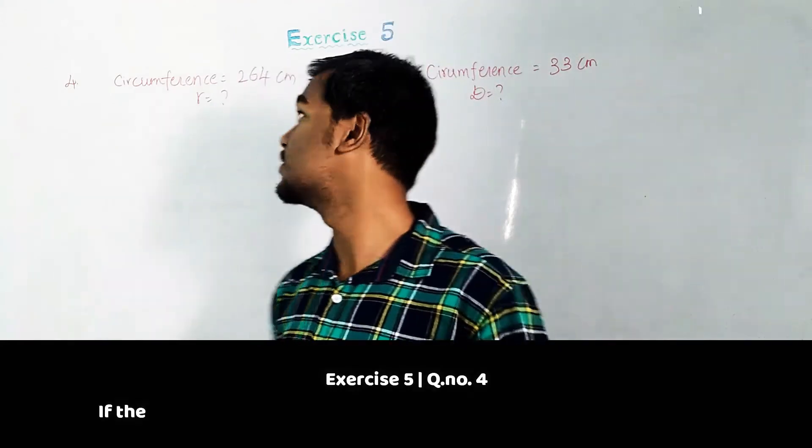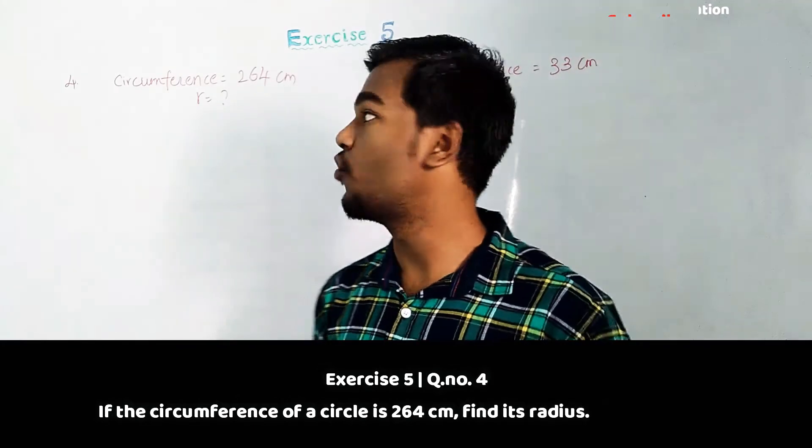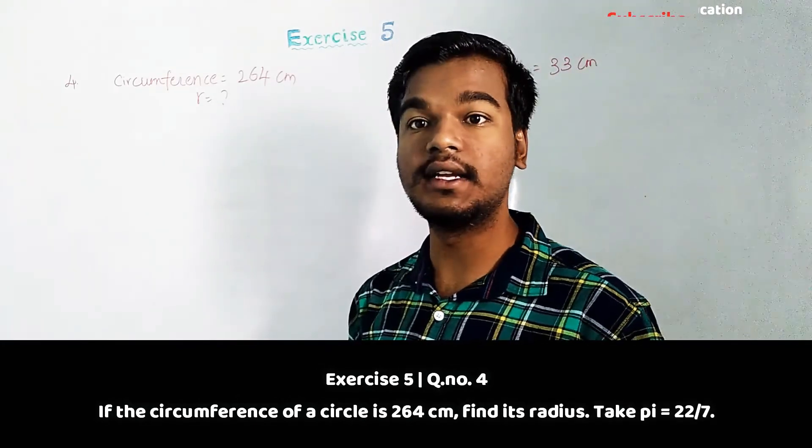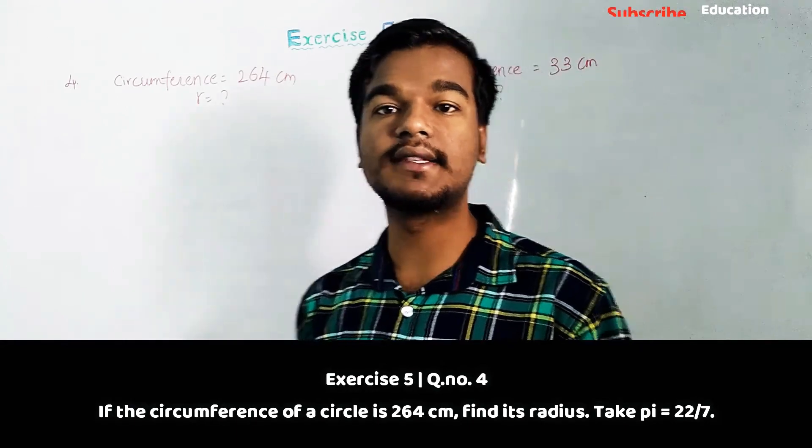In this module we're going to discuss the solutions for the fourth and fifth questions. The fourth question is: if the circumference of a circle is 264 centimeters, find the radius. Use the pi value as 22 by 7.